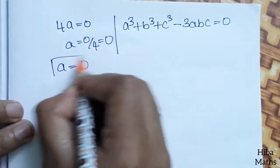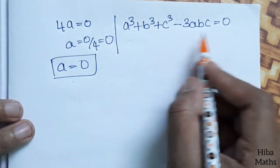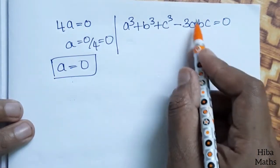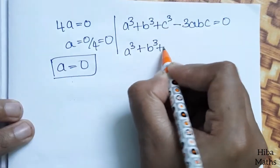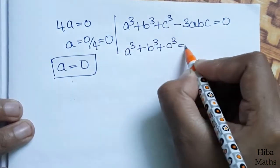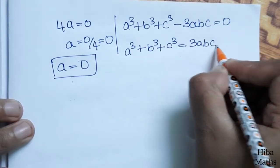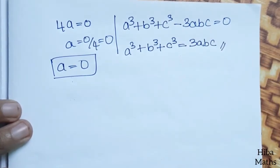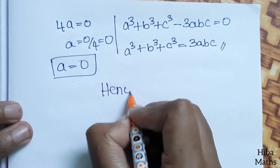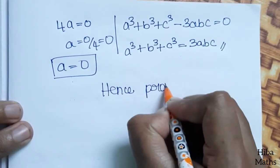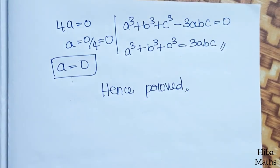So a = 0 is the first case. And a³ + b³ + c³ = 3abc is the second case. Hence proved. It is very easy to solve. Thank you so much for watching, see you next time.